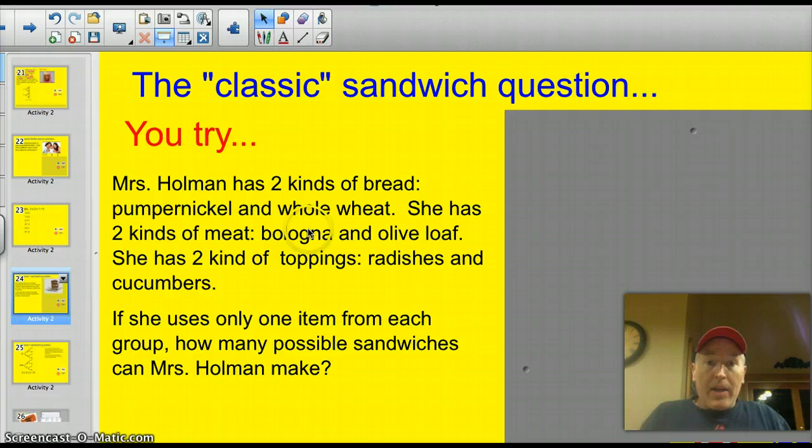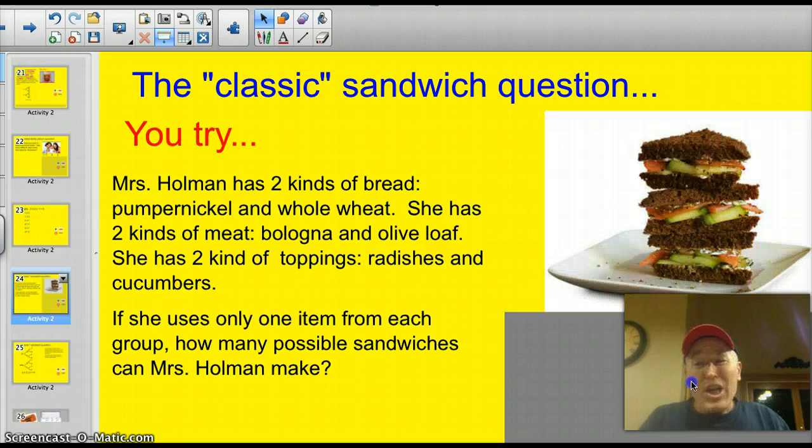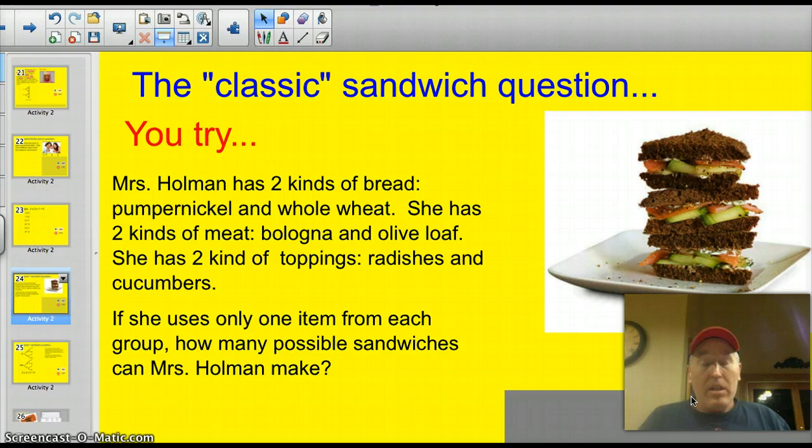All right. Then, there's one more type of question. That is the classic sandwich question. Test makers love making sandwich questions. We're boring people. We've got nothing better to do than sit around and think about stupid types of sandwich questions. So, I thought I'd write about Miss Holman across the hall there. Miss Holman has two kinds of bread, pumpernickel and whole wheat. She has two kinds of meat, bologna and olive loaf. She has two kinds of toppings, radish and cucumbers. If she only uses one item from each of those groups, how many possible sandwiches can Miss Holman make? I think a better question is, who wants to eat a pumpernickel and cucumber sandwich? Even better question, or better tip? If she asks you to switch lunches with her, tell her you're not interested. All right. Back to the problem. So, she's got two different kinds of bread, two different kinds of meat, and two different kinds of topping. Pause it and see if you can figure out how many combinations and what they would be. Go ahead.